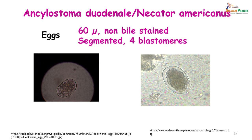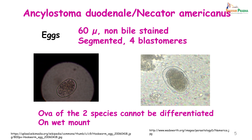Coming to the morphology of Ankylostoma duodenale and Necator americanus, their eggs or ova are 60 microns in size, non-bile stained, segmented, and show the presence of 4 blastomeres. It is difficult to distinguish the eggs of both these worms in a wet mount, and more studies need to be done in this field.